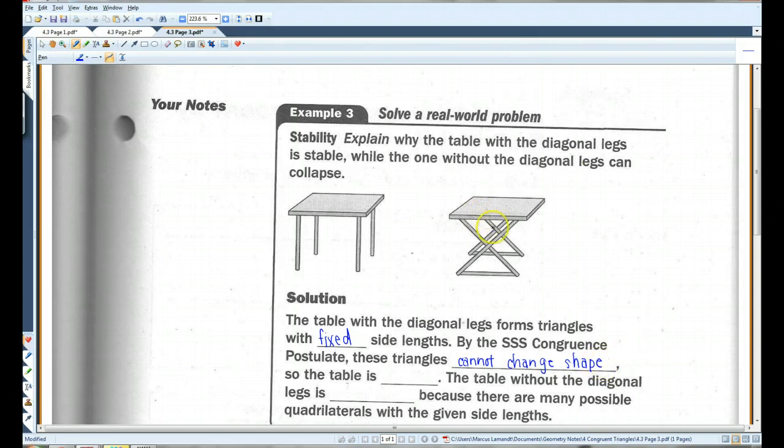Basically, no matter what I do, these triangles are going to remain in their shape because the side lengths all stay the same. If the side lengths all stay the same, the triangles are not going to change shape. So, this one, or sorry, so the table is stable.